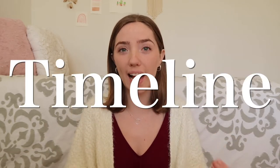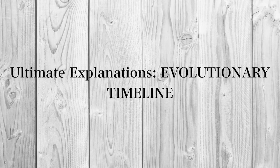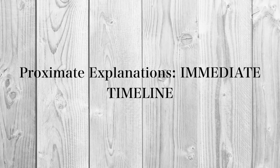The easiest way I tend to think about the difference between proximate and ultimate explanations is timeline. Ultimate explanations tend to have a lot to do with the evolutionary timeline of how an individual or a certain behavior got to be where they are today. On the other hand, proximate explanations are very immediate — you're not looking at many generations before you, but at what's happening right now to either cause an individual to have that behavior or that phenotypic appearance.